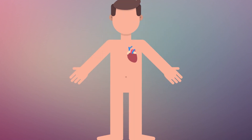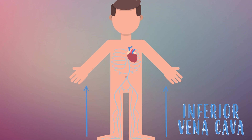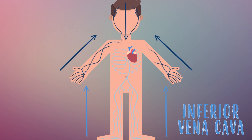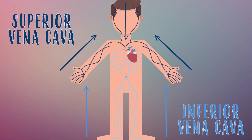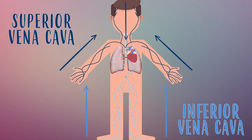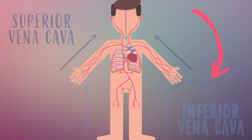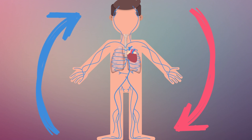The blood that returns from the lower part of the body flows through the inferior vena cava. The one that returns from the arms and head travels through the superior vena cava. All that blood reaches the lungs, where it gets oxygenated and returns back to the heart, and there the journey starts again.